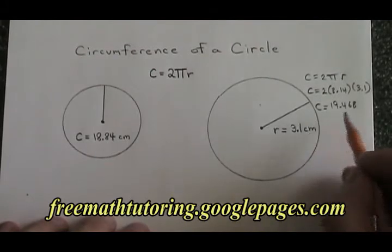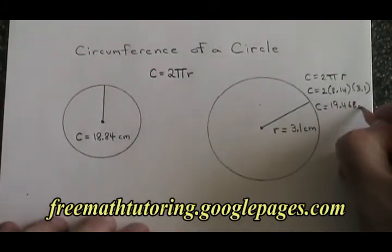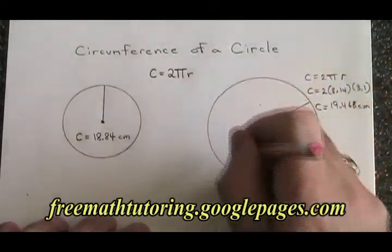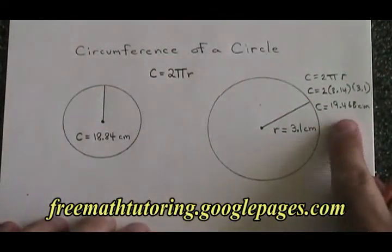Since the radius was in centimeters, this circumference must also be in centimeters. I know that the distance all the way around this circle is 19.468 centimeters.